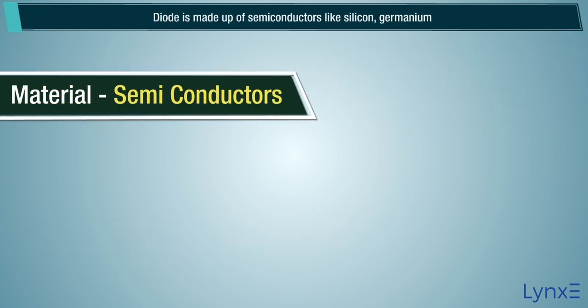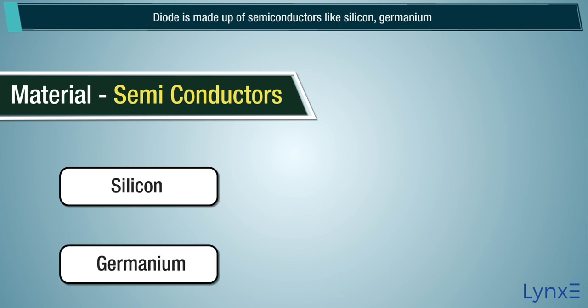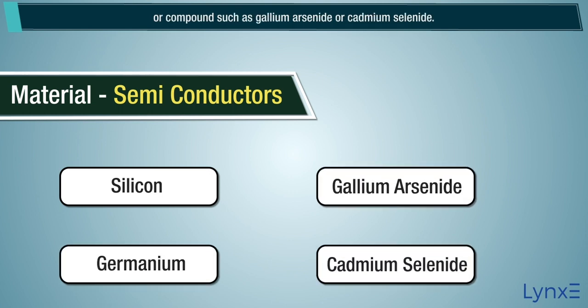Diode is made up of semiconductors like silicon, germanium, or compounds such as gallium arsenide or cadmium selenide. In this specific case, the diode is made up of silicon.